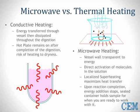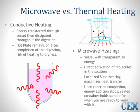Microwaves are transparent to materials such as Pyrex glass and Teflon; therefore, it passes right through and into the sample. Conductive heating, by contrast, requires each surface to be heated and then transfer heat to the next — it is not efficient.